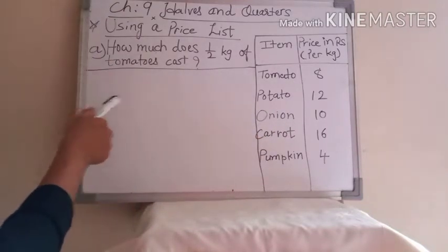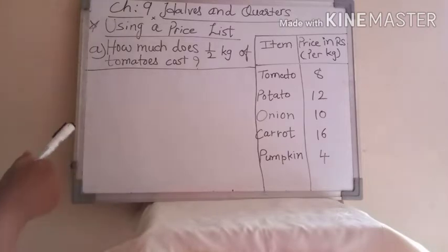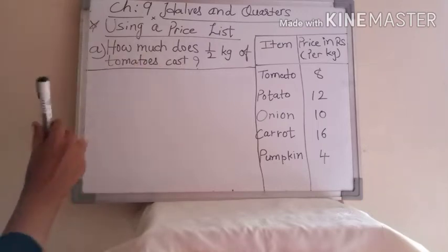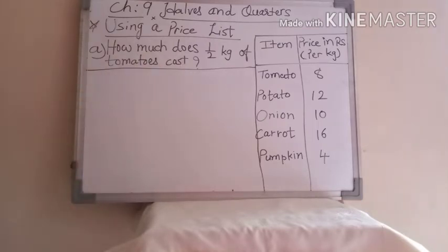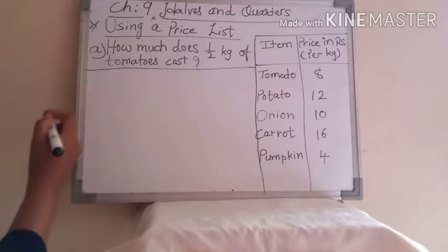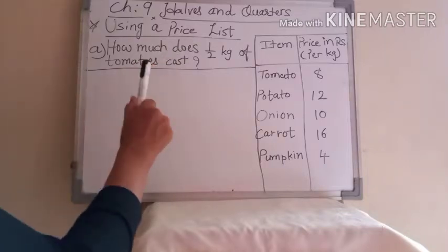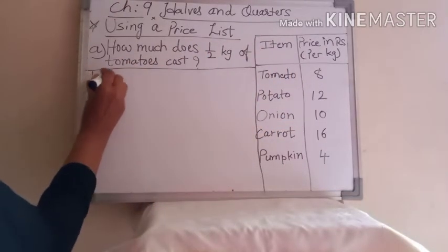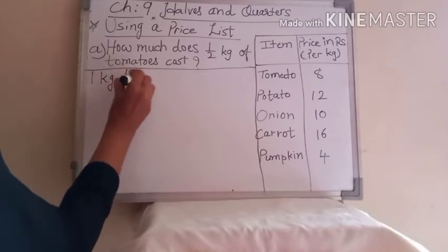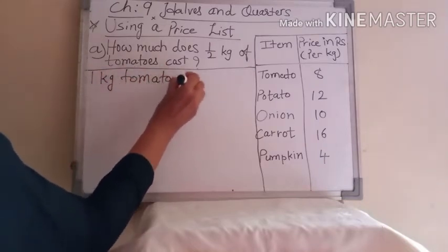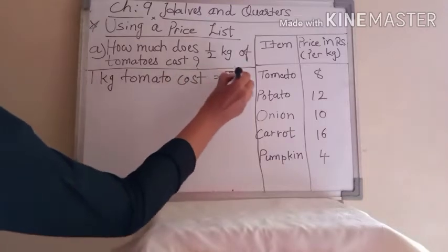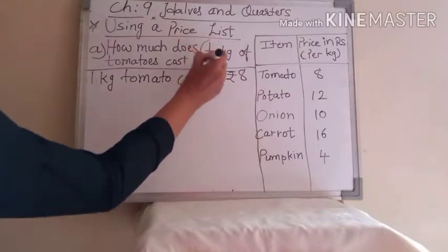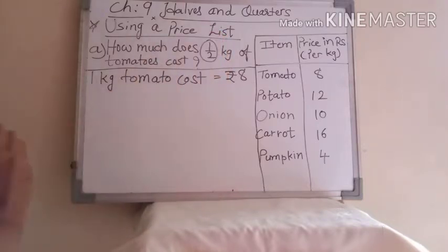Now we have to solve questions from this table. Our first question is: how much does half kg of tomatoes cost? That means we have to find the price of half kg tomato. So first we have to see the table — what is the price of 1 kg tomato? 1 kg is rupees 8. So we write: 1 kg tomato cost is equal to rupees 8. But we have to find the half kg.